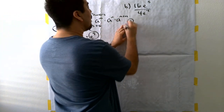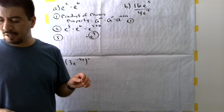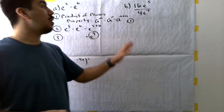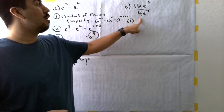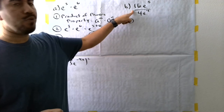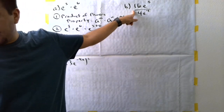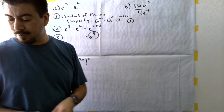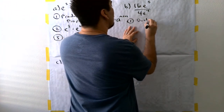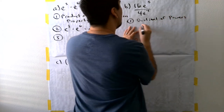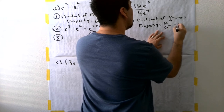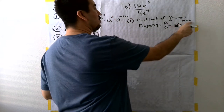For problem B, we're going to identify the appropriate property of exponents. You may not notice it right away because we have a 16 in the front and a 4 in the front of the other term. This is a division problem, so we look for the property that involves division — a line between two terms. In this case, we're going to use the quotient of powers property: a to the m over a to the n equals a to the m minus n. So we're going to be subtracting the exponents.